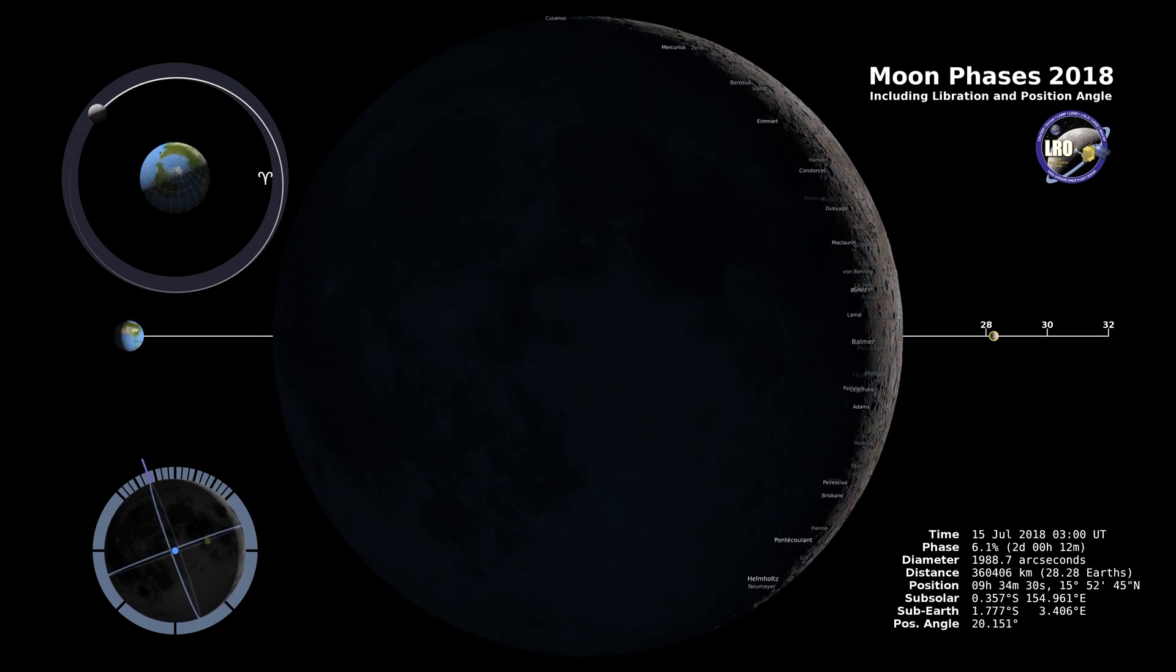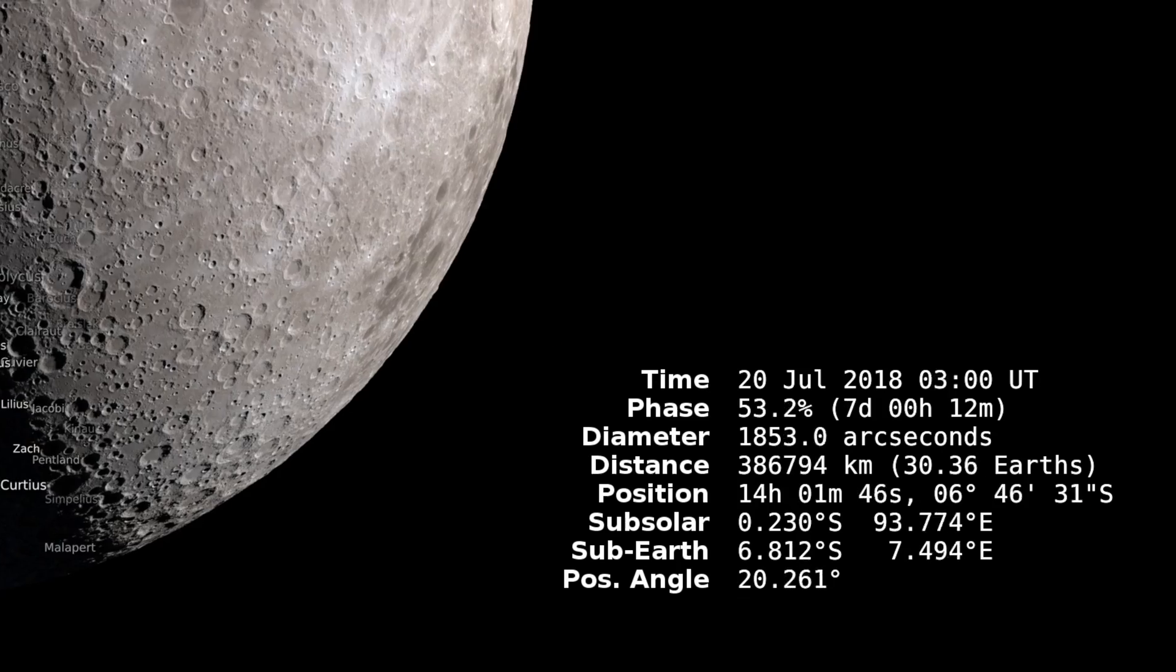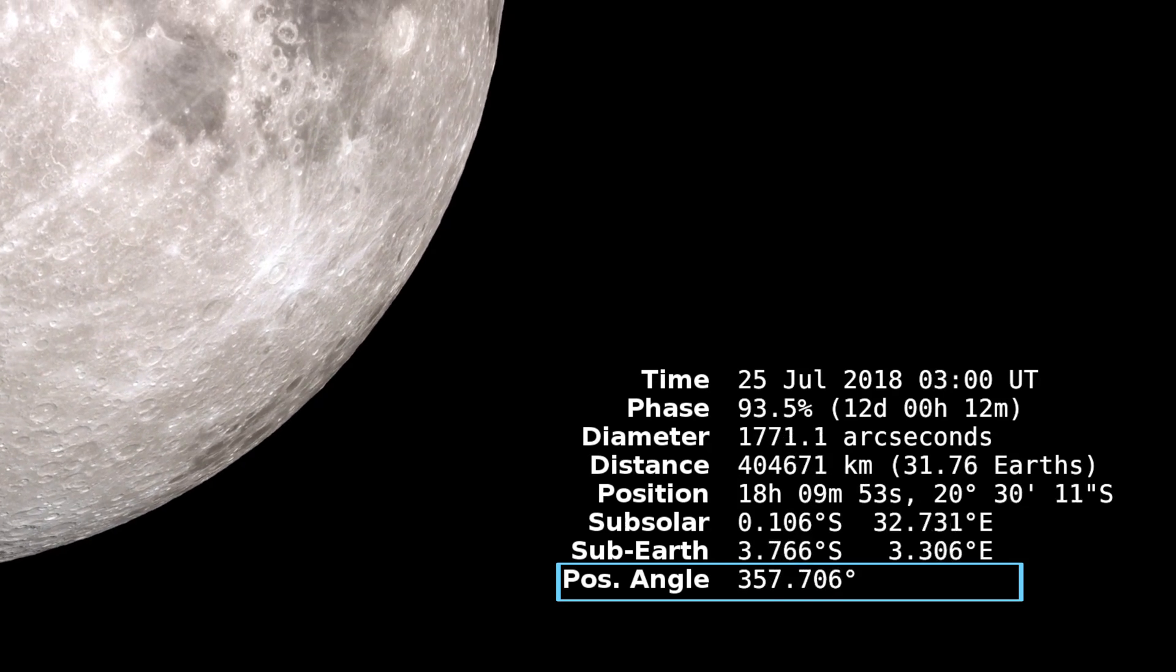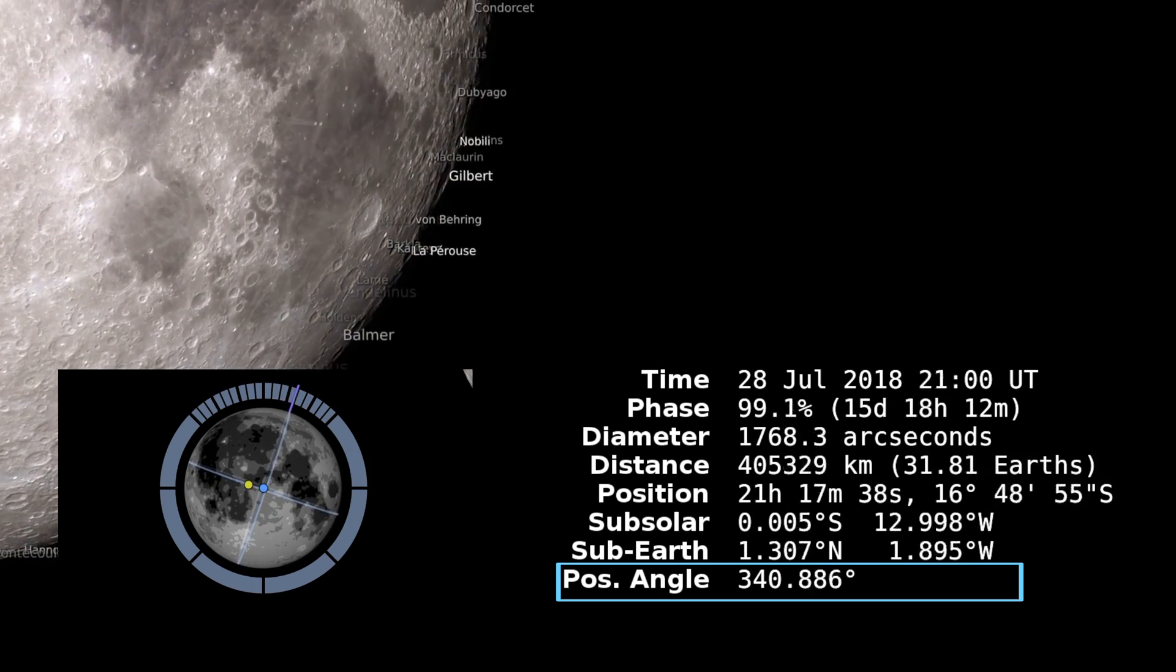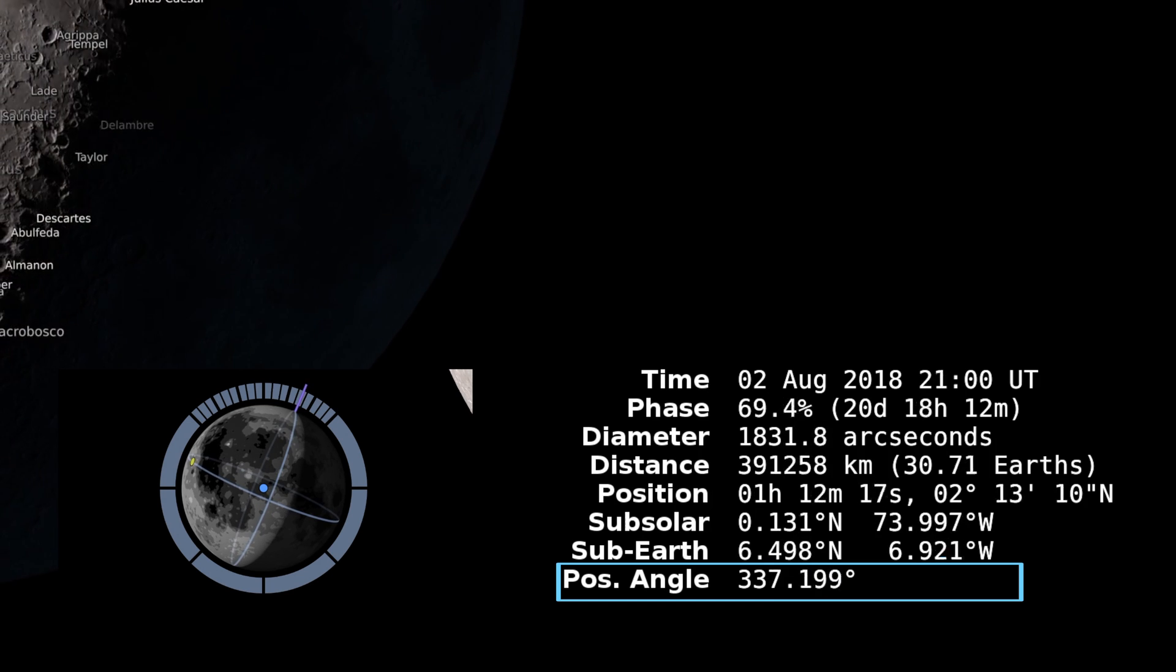On the bottom right here we have the ephemeris data. We have time, phase, diameter, distance, position, sub solar, sub earth and position angle. Position angle is just what I said over here on this left hand animation. It's describing how many degrees off of the north axis it's swinging and that's useful information to tell you about its libration.